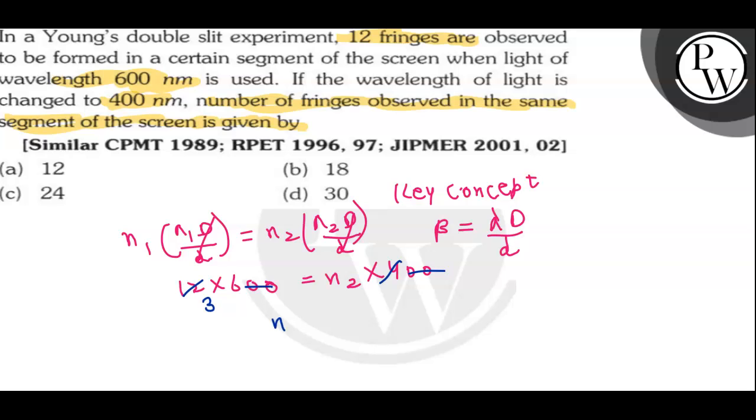So how many fringes are there for wavelength 400 nanometer? That is 18, which suggests that option (b) is the correct answer. I hope you get the concept. Wish you very good luck!